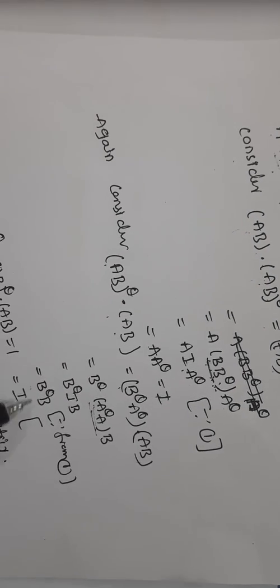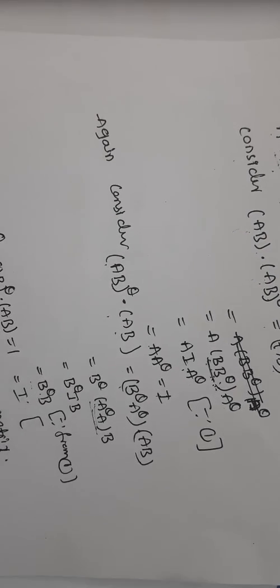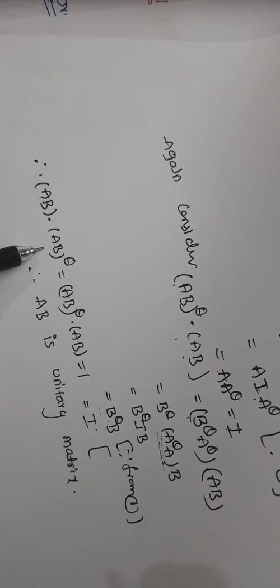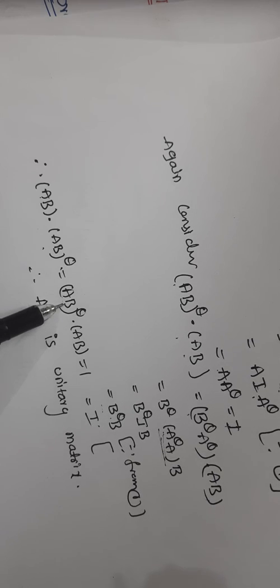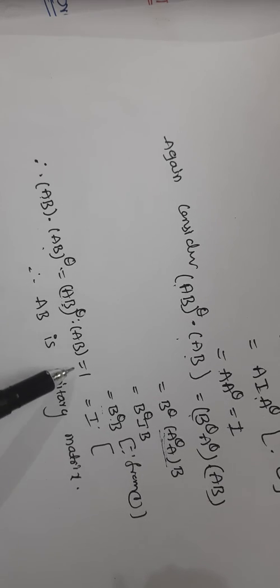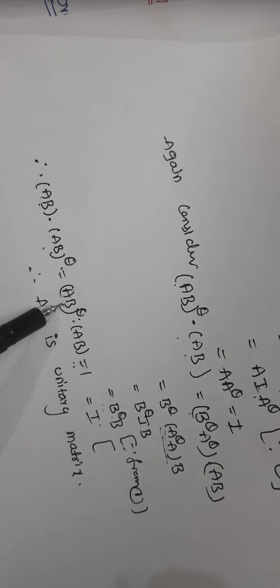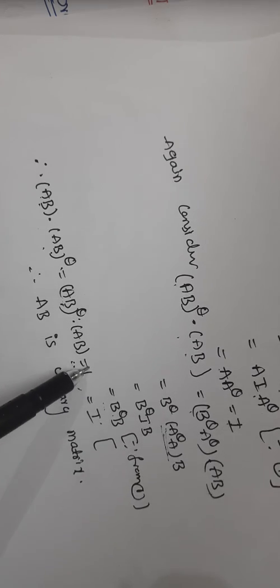Then again, what will come, B power theta B. A B dot. Finally, A B and A B to the power of theta is equal to, A B to the power of theta, and A B is equal to I. And A, A power theta, A power theta A equal to I.